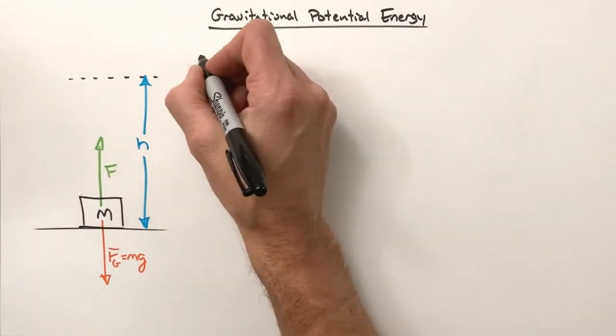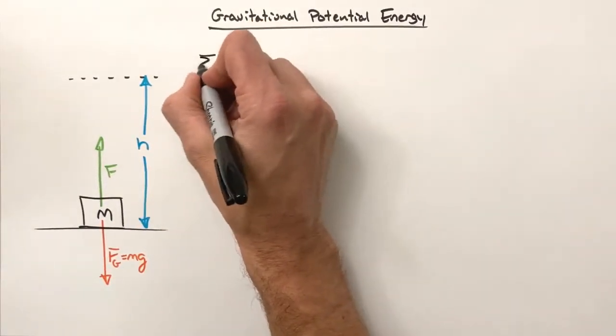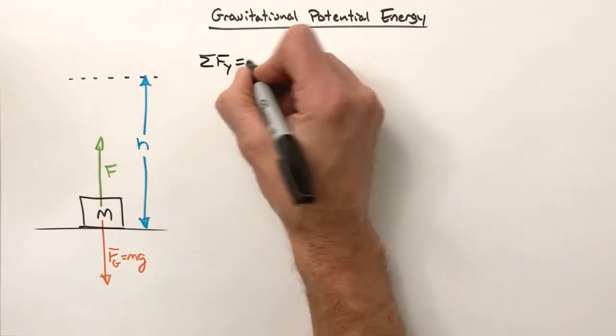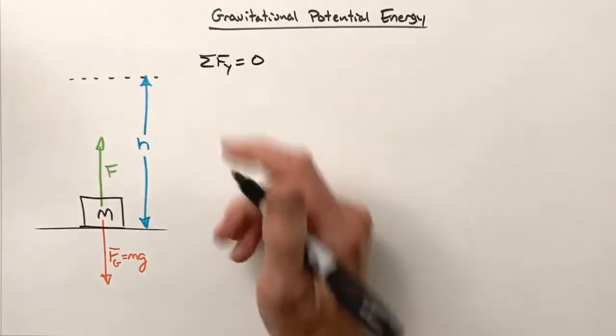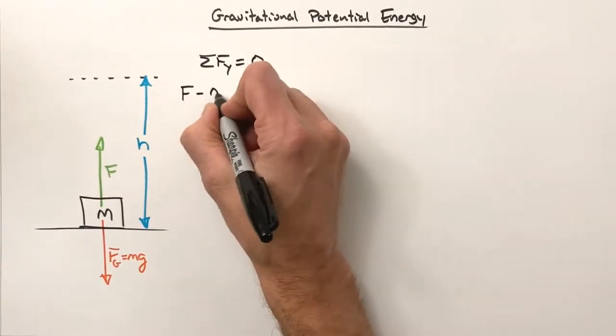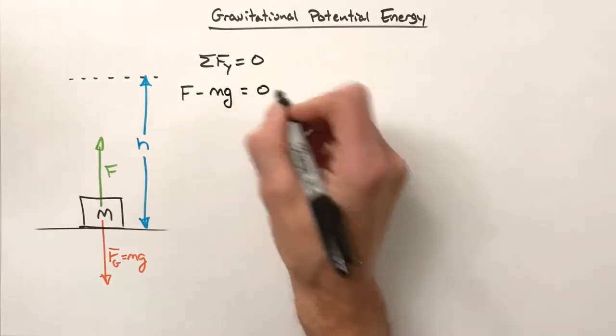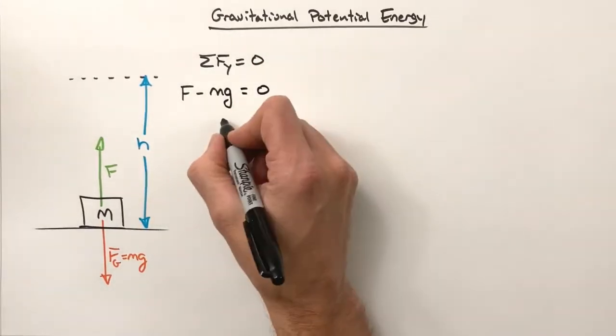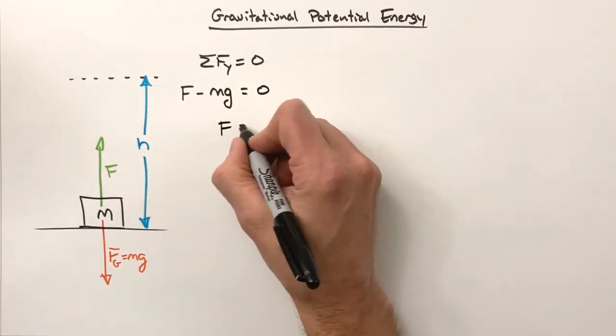So if I want to lift this box at a constant speed, that means that vertically the sum of all forces is going to have to be equal to zero. So the sum of all forces in the y-axis is going to be equal to zero - that is, the force up minus the force down equals zero. It's easy enough to see that the force F must be equal in magnitude to mg.